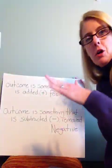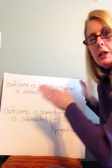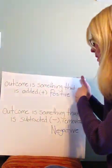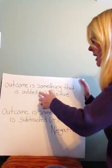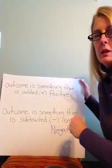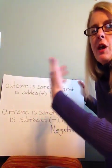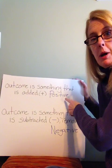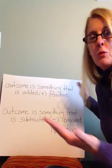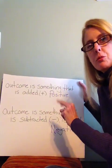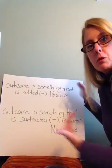To decide positive or negative, go back to the examples but forget about the behavior — only look at the outcome. Ask yourself: is the outcome something that is added? Something happens that wasn't there before? Then label it positive. Or is the outcome something that was taken away, subtracted, prevented? Then label it negative. The plus sign means added, positive; the minus sign means subtracted, negative.